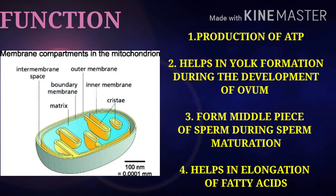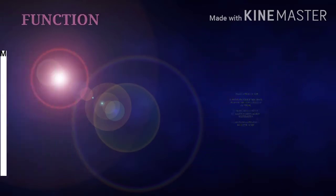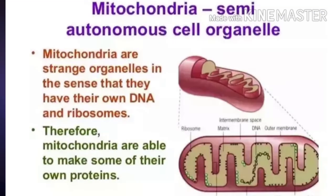Mitochondria also help in yolk formation during the development of the ovum. During sperm maturation, they help in elongation of fatty acids. The presence of DNA and ribosomes in the mitochondria makes these organelles semi-autonomous, independent for the production of their own proteins.